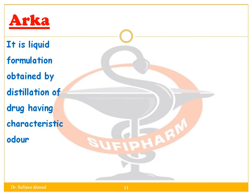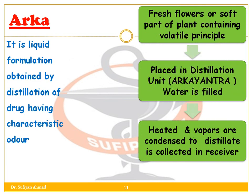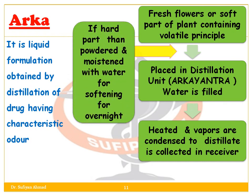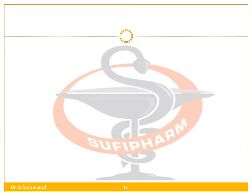For the preparation of Arka, if the drug contains hard parts, it is powdered and moistened with water for softening overnight. Fresh flowers or soft parts of the plant containing volatile principles are placed in the distillation unit, water is added, and the mixture is heated. The vapors are condensed and the distillate is collected in a receiver.